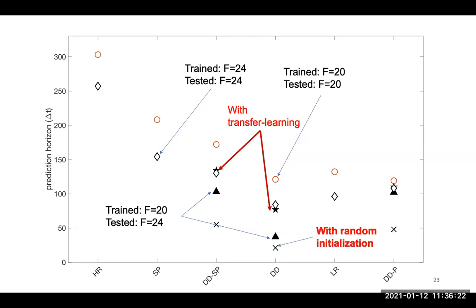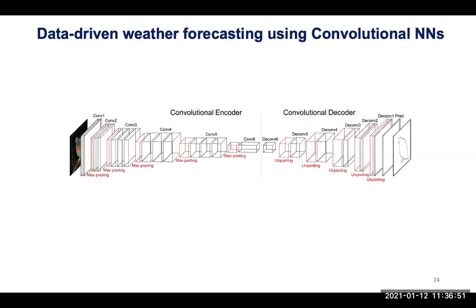That was pretty much the end of the DDSP work. We also looked at long-term predictions such as the probability distribution for hundred-year runs, and all those results hold up as well. You can find them in the paper. Now I'll quickly jump to the work I was doing with Mustafa and Karthik at NERSC, which was on data-driven weather forecasting.